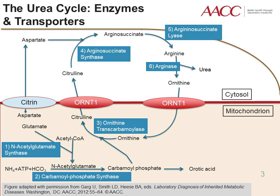Alternatively, ornithine transcarbamylase, OTC, in the third step, catalyzes the transfer of the phosphate group from carbamoyl phosphate to ornithine to produce citrulline. Citrulline then enters the cytosol from the mitochondria. In the cytosol, citrulline combines with aspartate, which is shuttled from the mitochondria by the transporter citrin.